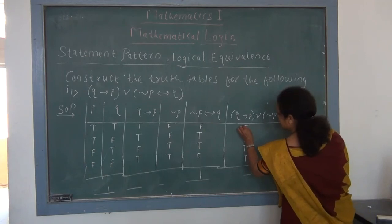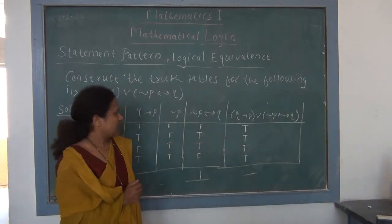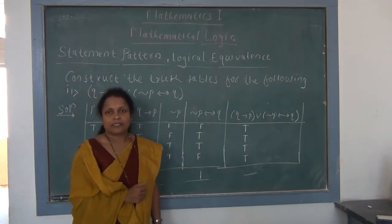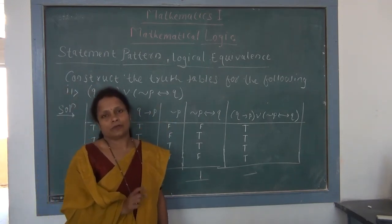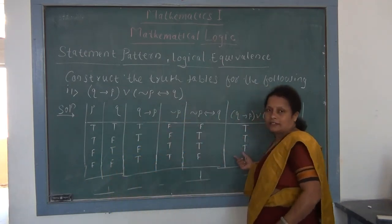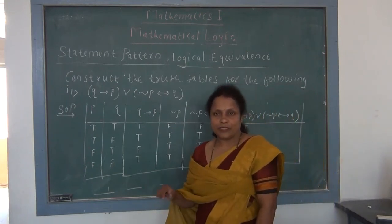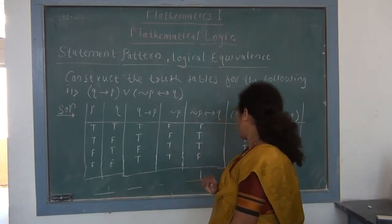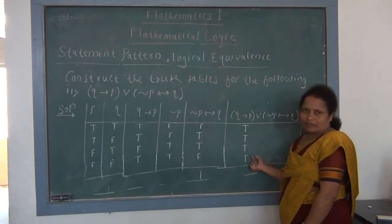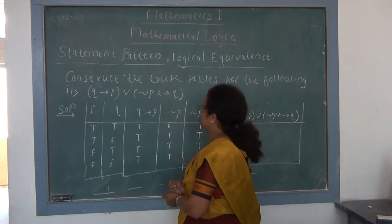Observing the last column for (Q→P) ∨ (¬P↔Q), all truth values are T. So this statement pattern is a tautology. When all entries are T it is a tautology; when all F it is a contradiction; when mixed T and F it is a contingency.